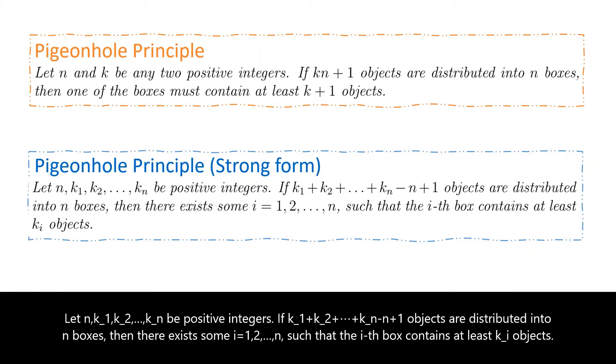If k1 plus k2 plus so on to kn minus n plus one objects are distributed into n boxes, then there exists some i from one to n such that the i-th box contains at least ki objects.